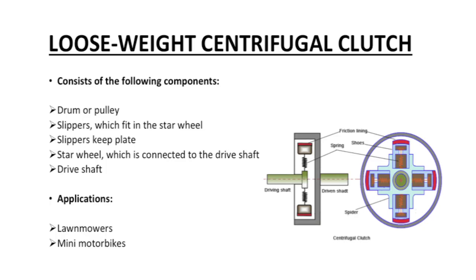Loose weight centrifugal clutch components: a drum or pulley, a sleeper fitted to the star wheel (also called shoe keeper plates), a star wheel connected to the drive shaft, and the drive shaft. Application: found on lawn mowers and mini motorbikes.